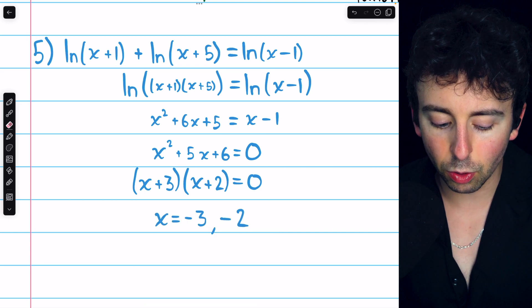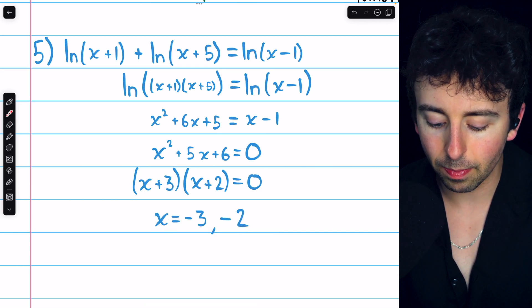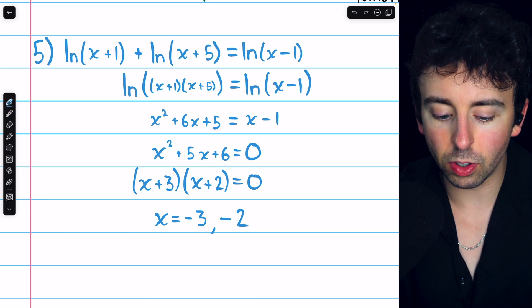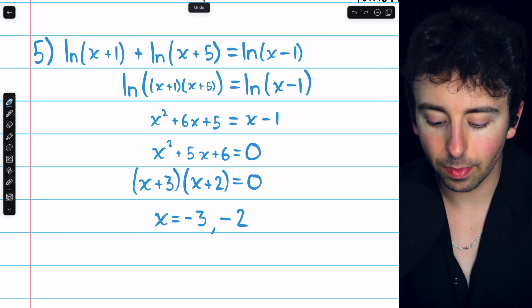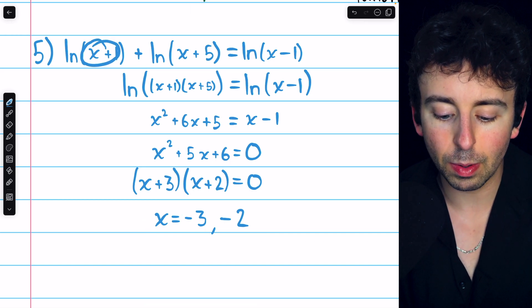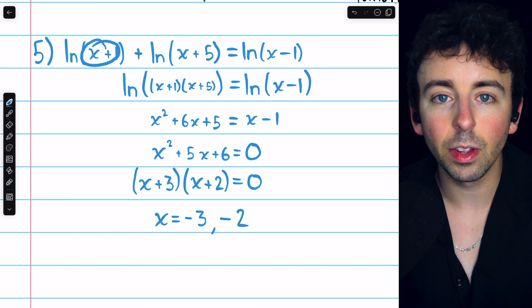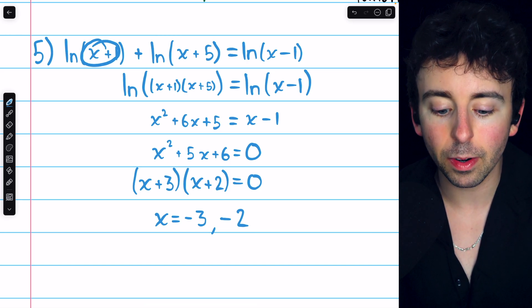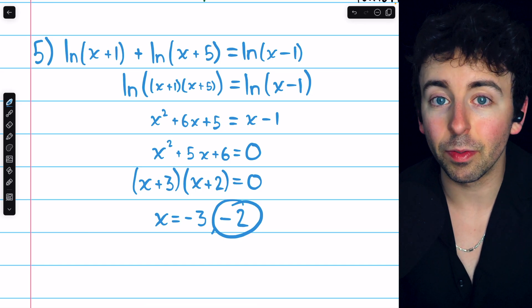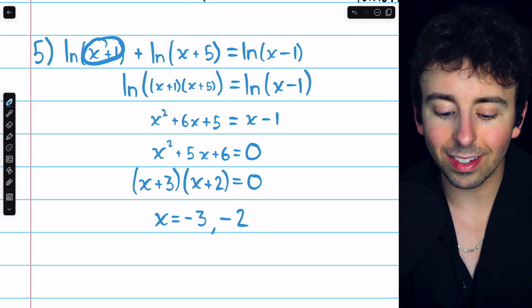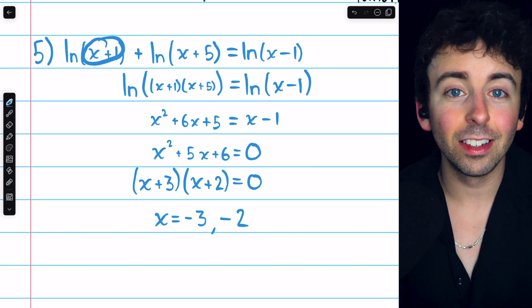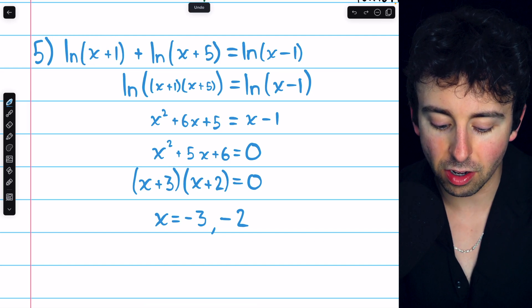But again, we have to check these solutions in the original equation. Does x equals negative three make sense? Well, no, because negative three plus one, for example, is negative, and we can't take the natural log of a negative number. What about negative two? Well, that doesn't work either for the same exact reason. Negative two plus one is negative, and we can't go plugging that into the natural log function. So again, this equation has no solutions.